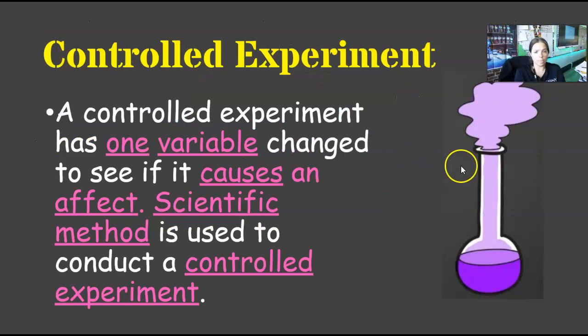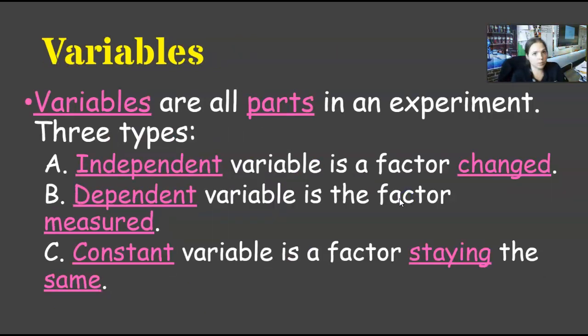So in a controlled experiment, what you're going to do in your notes is where the pink underlined words please fill in. A controlled experiment has one, just one variable changed to see if it causes an effect. Scientific method is used to conduct a controlled experiment. So we just looked at the scientific method, there's seven parts to it. Now we're saying that a controlled experiment is using the scientific method to explain what's going on.